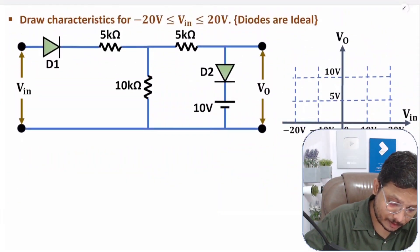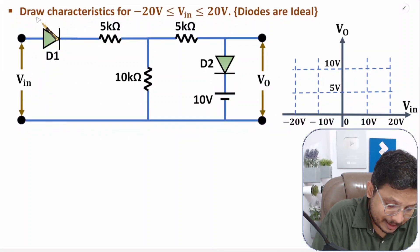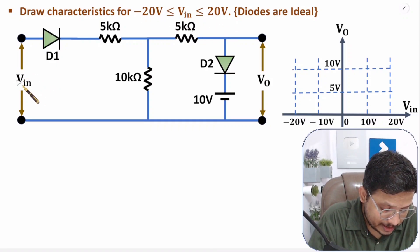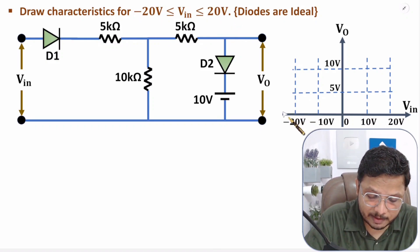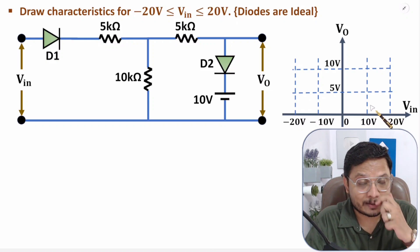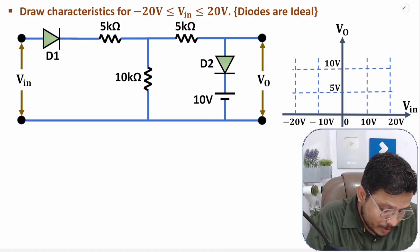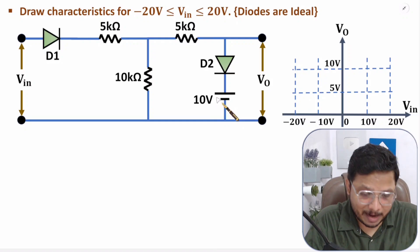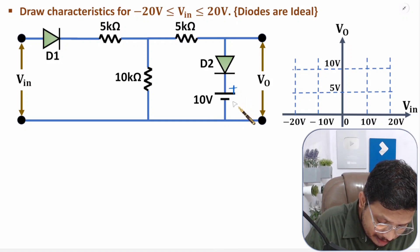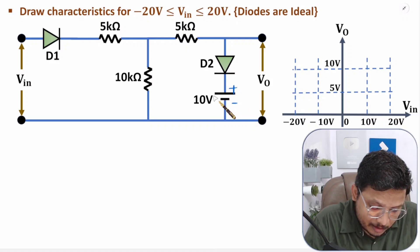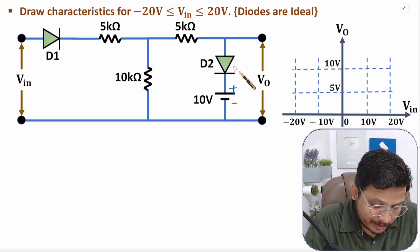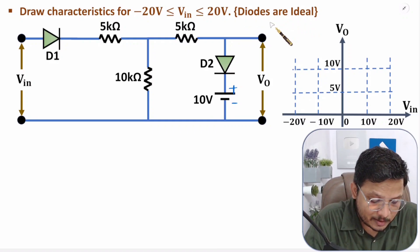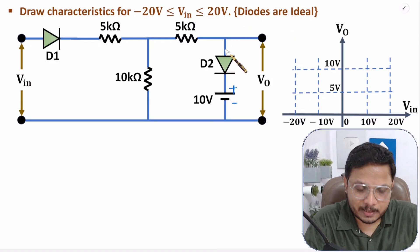Now let us move to the second question. We need to draw the V_in vs V_out characteristics as V_in varies from −20 V to +20 V. Here we have two diodes, D1 and D2. With D2, the 10 V battery has its positive terminal at the cathode, so to turn D2 on you must apply greater than 10 V at the anode. We are considering the diodes ideal, so no cut-in voltage is needed.